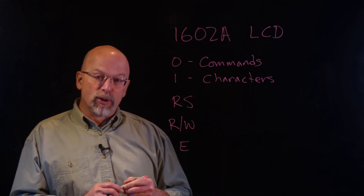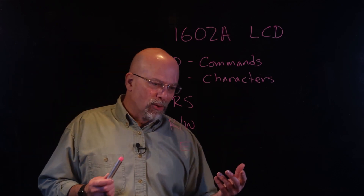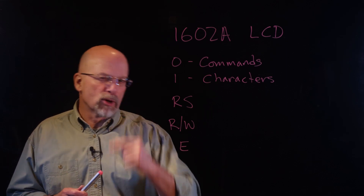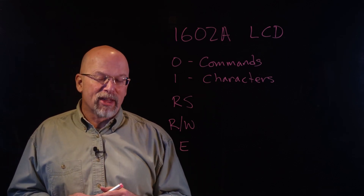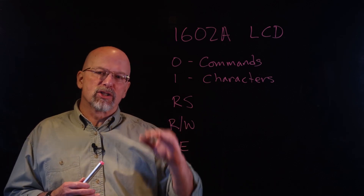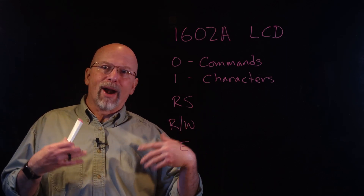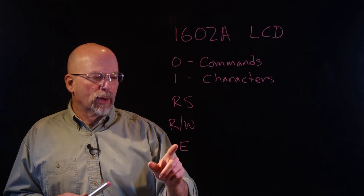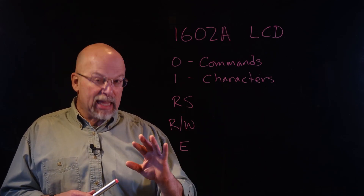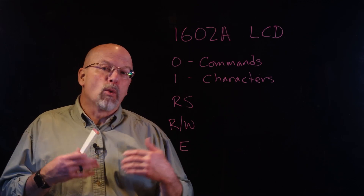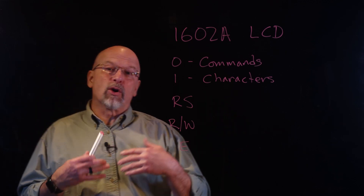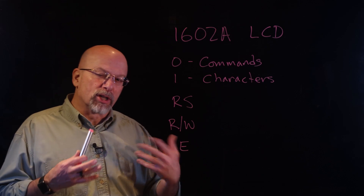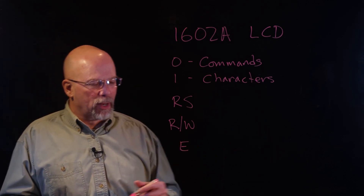If you are familiar with memory interfaces, you know about something called a chip select. Most of the time they're active low, meaning when it's a 0, we're activating the chip. In the case of the E — enable — what we're going to do is write a 1 to it in order to enable this memory interface and communicate with this LCD display.